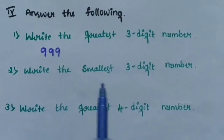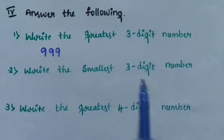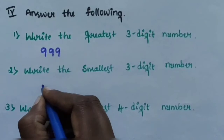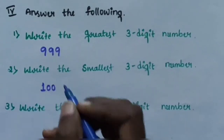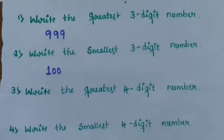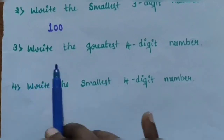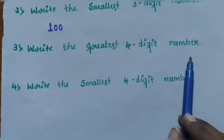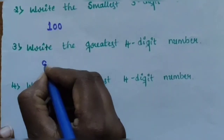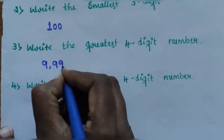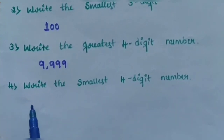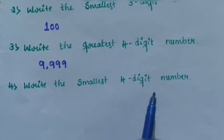Question number 2: write the smallest 3-digit number. The smallest 3-digit number is 100. Question number 3: write the greatest 4-digit number. The greatest 4-digit number is 9999.